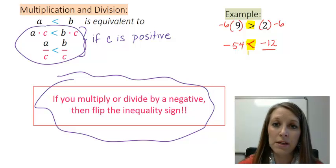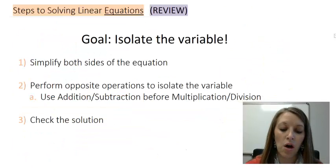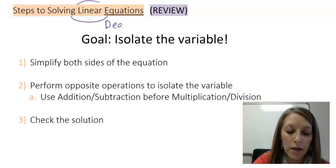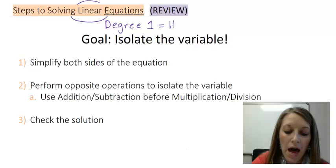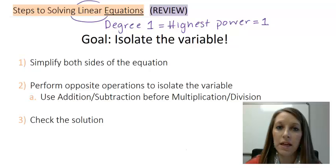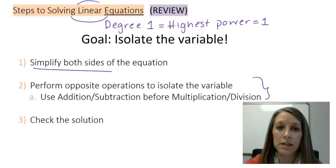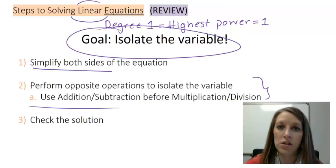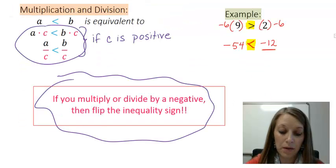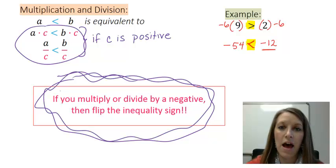Now let's review the steps we used to solve linear equations. Linear means a degree-1 statement, where the highest exponent on the variable is 1. Steps are: simplify both sides if necessary; move things around the equal sign using opposite operations — addition and subtraction before multiplication and division — to isolate the variable; then check your solution. These are basically the exact same steps for solving linear inequalities, with one exception: if we multiply or divide by a negative, we have to flip the inequality sign.